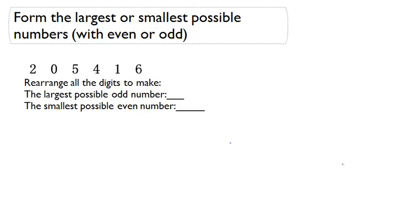We are going to form the largest or smallest possible numbers with even or odd. So we have six digits. They want us to rearrange all the digits to make one, the largest possible odd number, and two, smallest possible even number.